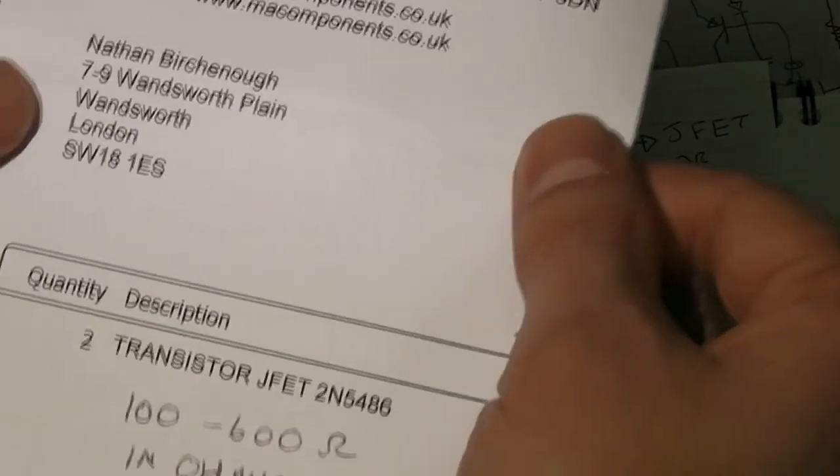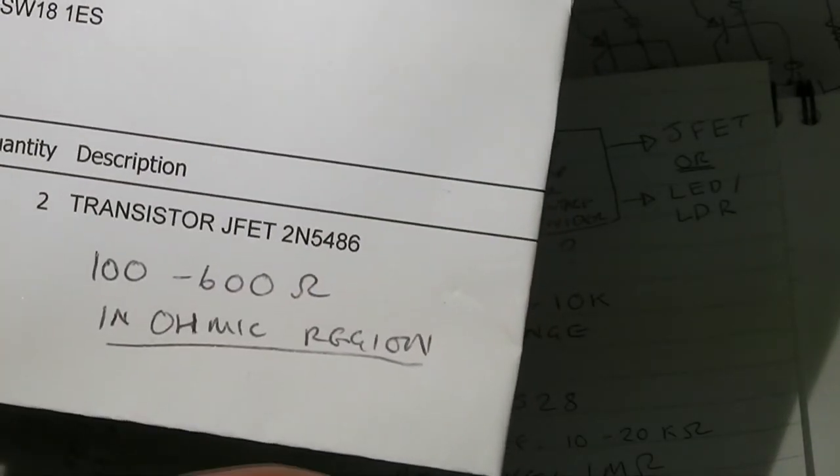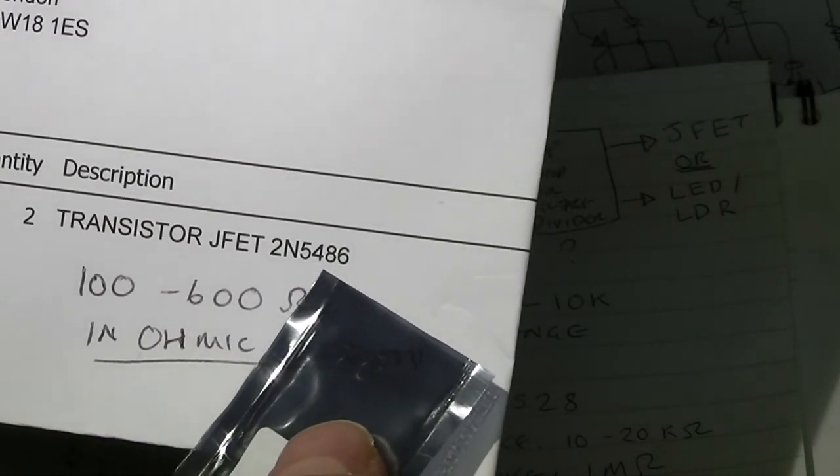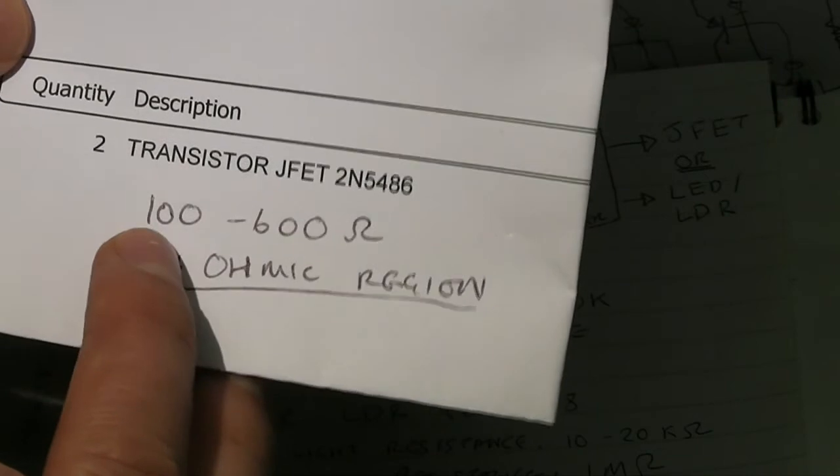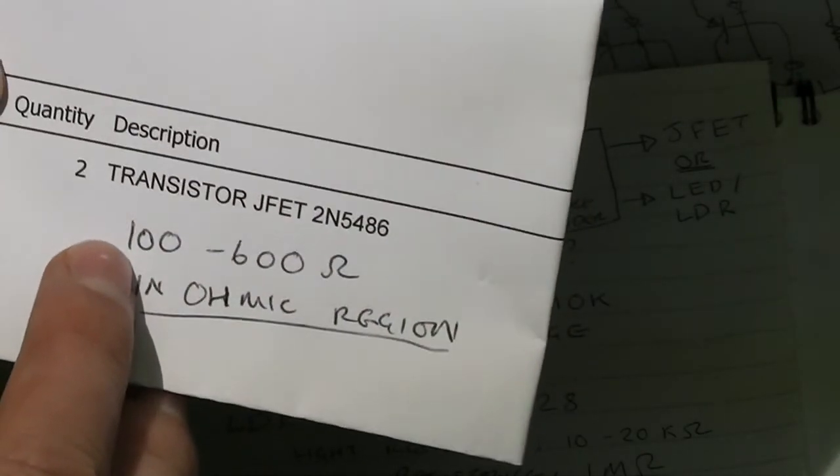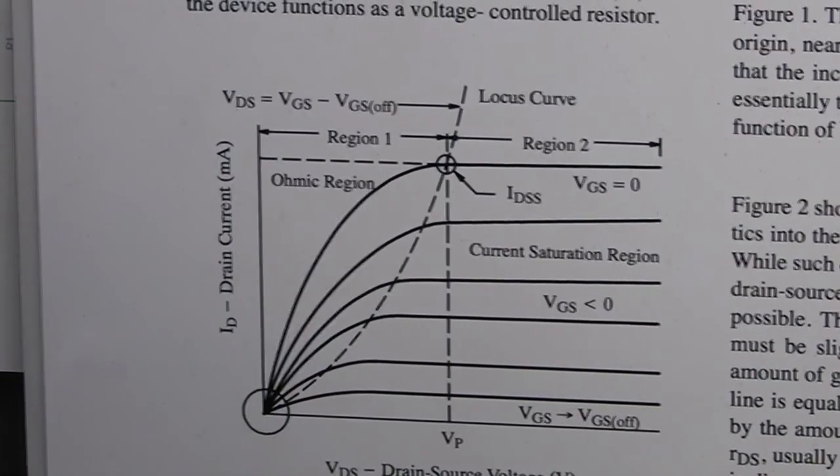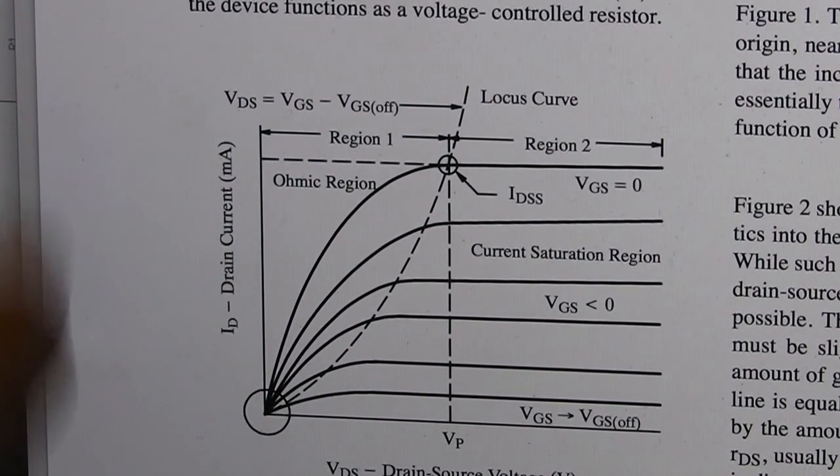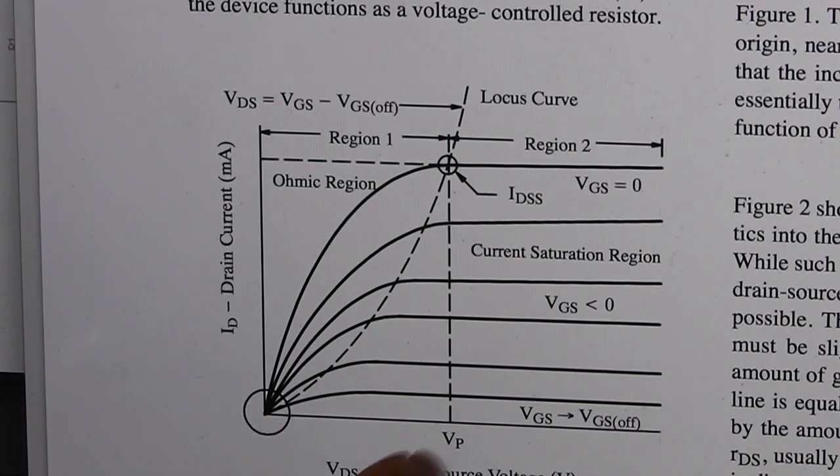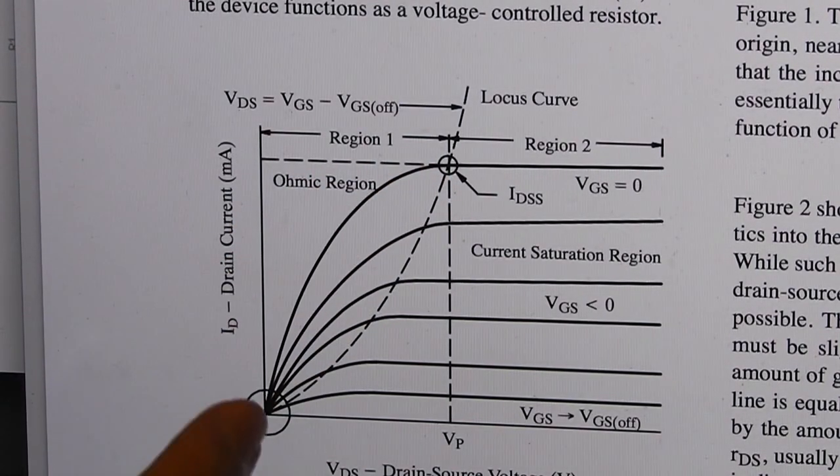JFETs are, I don't really know that much about them either, but they seem to be very interesting components. Junction field effect transistor, I believe it stands for. This is the 2N5486, and I was reading a data sheet which reckons that it should be able to vary its resistance between 100 to 600 ohms in the ohmic region of its performance. The ohmic region of the JFET is when the amount of current it passes varies with voltage. I can see from this graph that this is not necessarily going to be a linear process either.